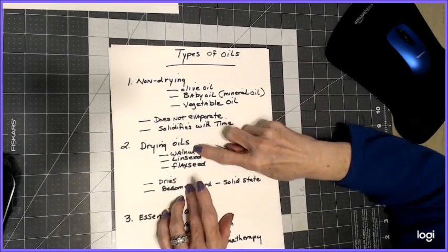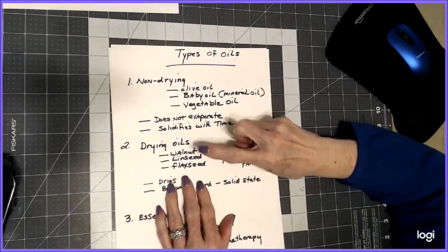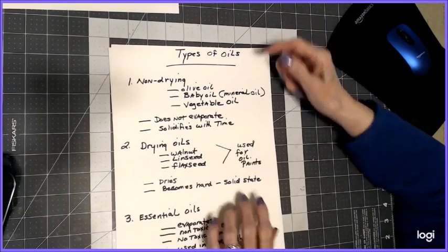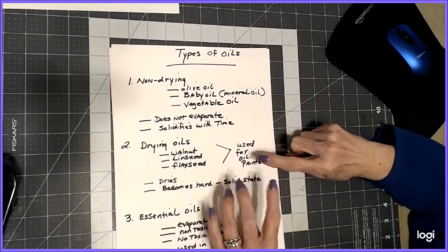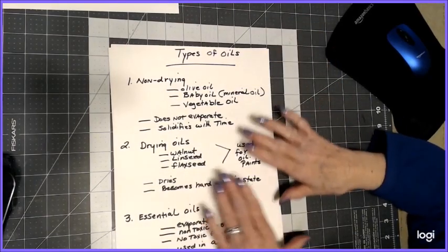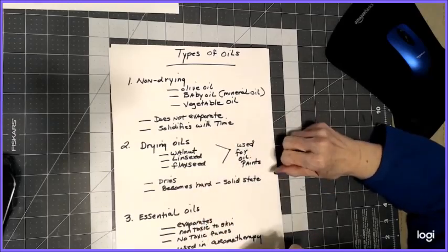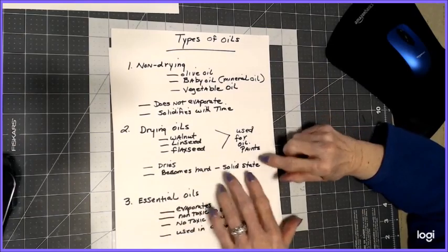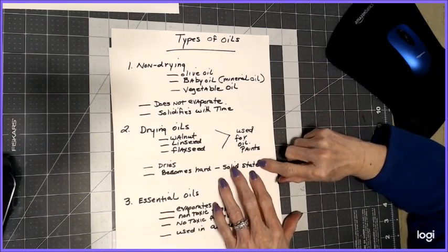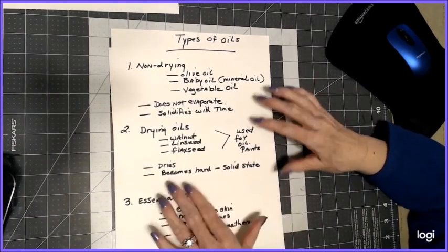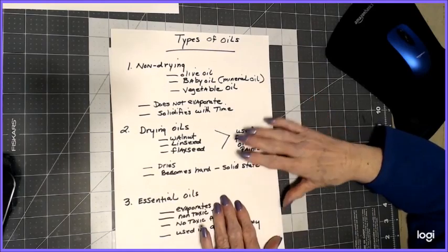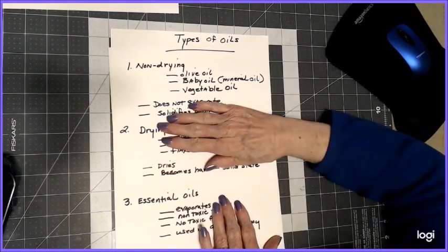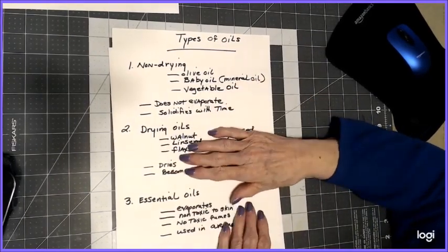Then there is a thing called drying oils, which are walnut oil, linseed oil, flaxseed oil, and they're used to put into oil paint. That's not what we want to use either. They do dry, they don't evaporate, but they become hard and they form a solid state with time. That's why they're used in oil painting. This is out for colorists in color books, I feel.